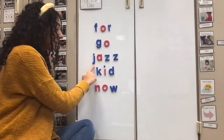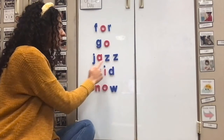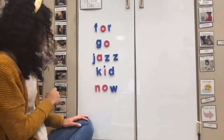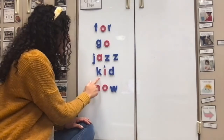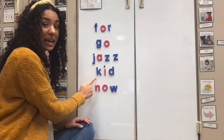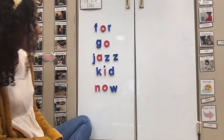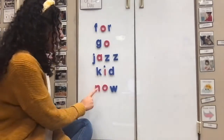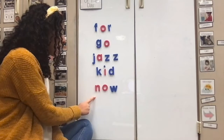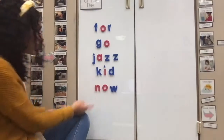Moving down to the next one. J-J-Jazz. J-J-Jazz. What does J-J-Jazz start with? The letter J. Hmm, how about this one? K-K-Kid. K-K-Kid. What does K-K-Kid start with? The letter K. You're right again. All right, now to the last one. Can you say N-N-Now? N-N-Now. What does N-N-Now start with? What letter? Oh yeah, the letter N. Way to go!